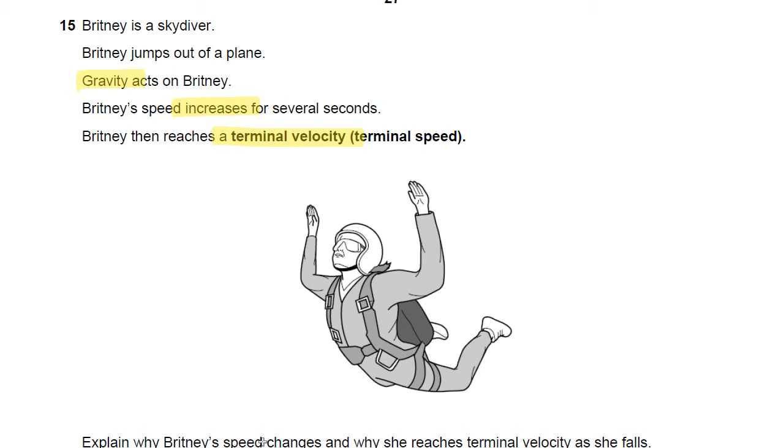You need to explain why Brittany's speed changes and why she reaches a terminal velocity. So basically, this is a two mark question. The first mark is going to be why does the speed increase at first, the second mark is going to be why she reaches this terminal velocity.